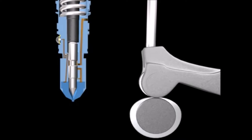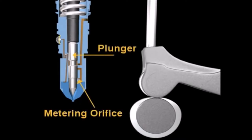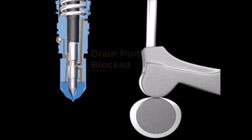As this occurs, the injector return spring lifts the injector plunger, uncovering the metering orifice. During this time, flow through the drain port is blocked by the injector plunger. Metering of fuel occurs during the entire time the cam roller is on the inner base circle.